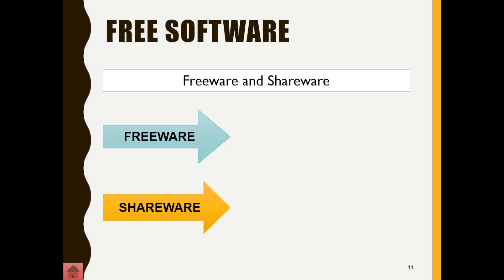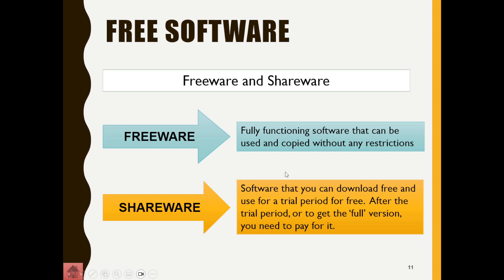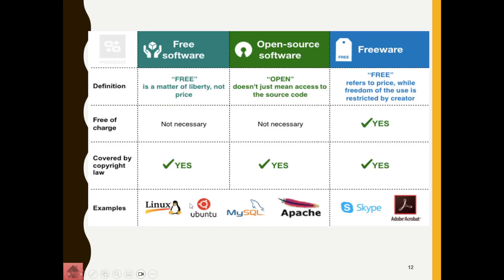With software, you also get some free software, divided into freeware and shareware. Freeware means the software has all its functionality and is completely free — you can copy and distribute it with no restrictions. Shareware, however, is software you can download for free but can only use for a trial period; you have to pay to get the full version. We also have open source software, with a few examples of that type.